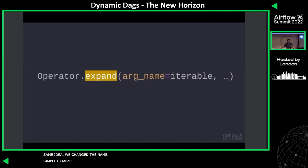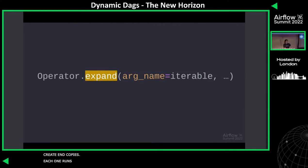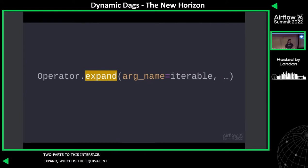Simple example: operator.expand(). What this will do is the Airflow scheduler will look at whatever your iterable is and create N copies of this task — we call them mapped task instances. Each one runs independently, each one has its own log and its own status. But Airflow can handle, well, I want 100 of them this week and one of them next week. There are two parts to this interface: there's expand, which is like the equivalent of map() in Python.